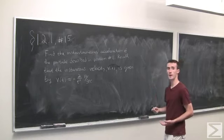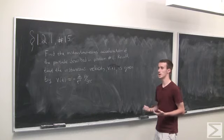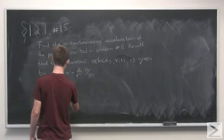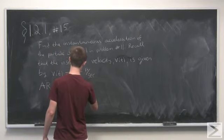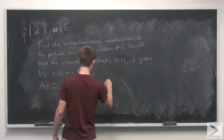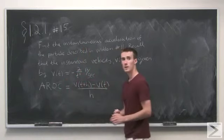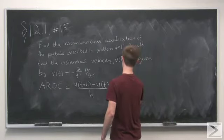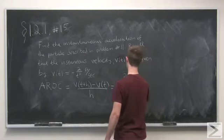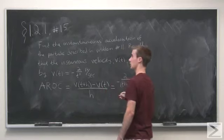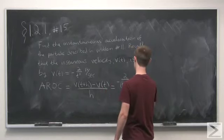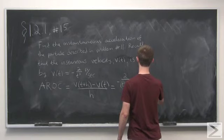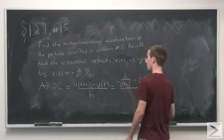So we start out by looking at the average rate of change over the interval t to t plus h. And next we just plug in to the formula for velocity that we found in problem number 11. We get minus 2 over t plus h cubed. And we want minus, minus, now we have minus 2 over t cubed, all over h.